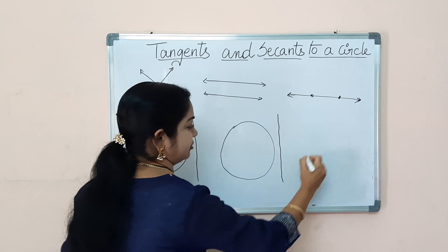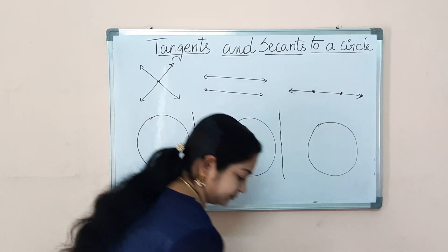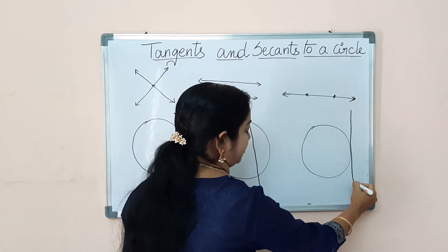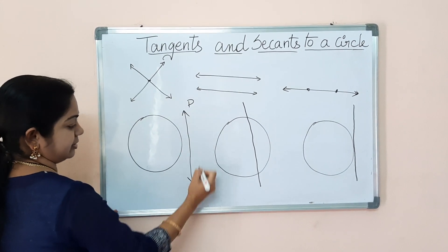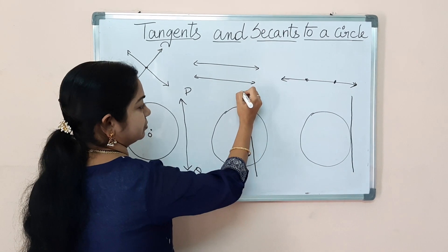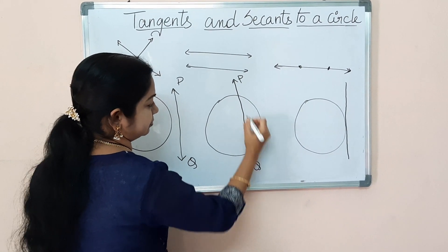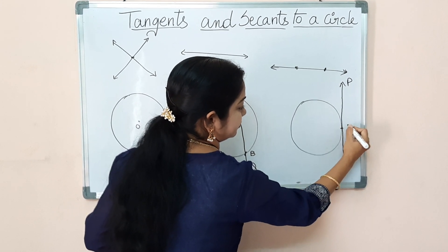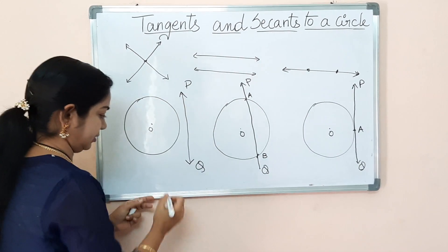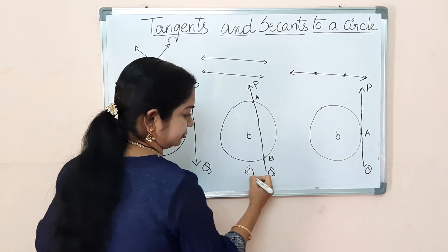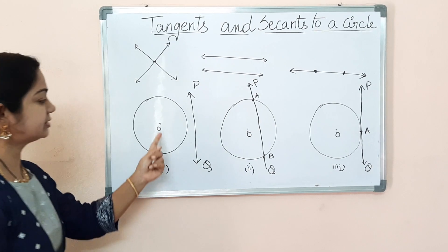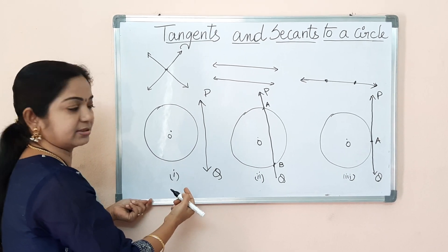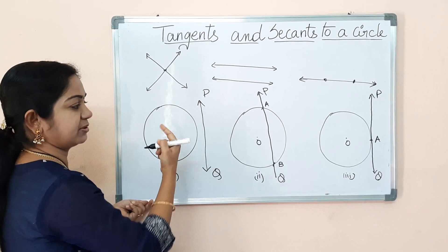I'll be drawing three figures — keenly observe them. I've drawn a circle and a line PQ. The circle has a center O. In the first figure, the second figure has the same line PQ, and the third one also has line PQ with center O. Looking at the first figure, we see that line PQ with respect to the circle is not touching the circle or intersecting the circle, so the line is called a non-intersecting line with respect to the circle.